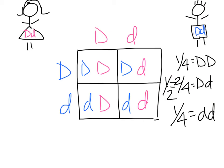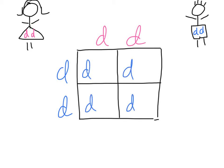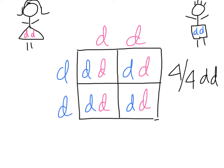Who's on top? Doesn't matter. The very last cross we haven't done: homozygous recessive × homozygous recessive. This one has the same type of outcome as homozygous dominant × homozygous dominant. You just do your Punnett square. And look — four out of four are little d, little d.